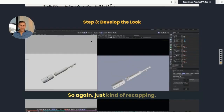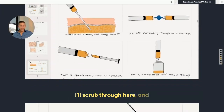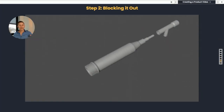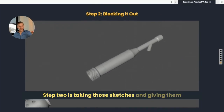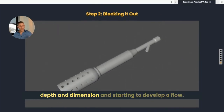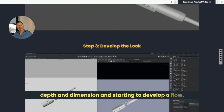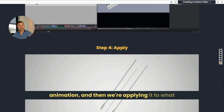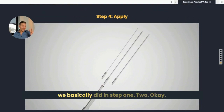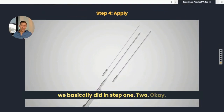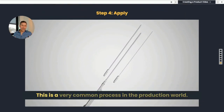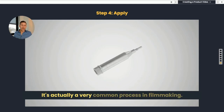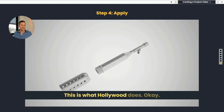Just recapping — you can see the progression here. Step one is sketching it out. Step two is taking those sketches and giving them depth and dimension and starting to develop a flow. Then we're developing the look of the whole animation, and then we're applying it to what we did in steps one and two. This is a very common process in the production world — it's actually what Hollywood does in filmmaking. If you follow these steps with your production partner, you're guaranteed to have really good results.